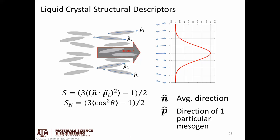A commonly used expression to describe rotational order is given in terms of a dot product of two vectors. Vector n-hat is that average direction — exactly what we called the director: a unit vector pointing in the average direction of the collective whole. Vector p is the vector going along the direction of one particular mesogen. We're looking at an expectation value of this dot product. Since both are unit vectors, the dot product is just the cosine of the angle between them.